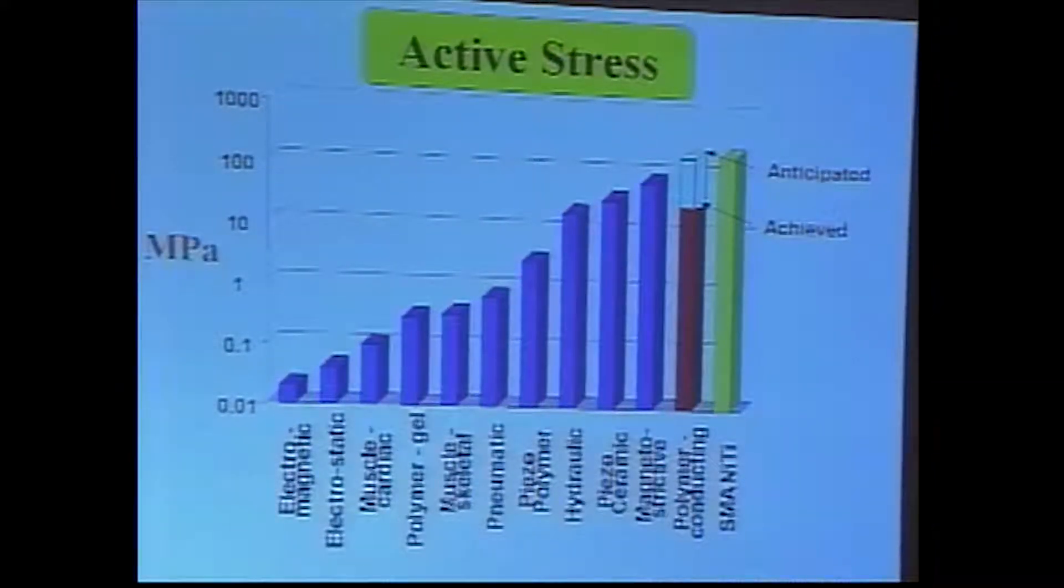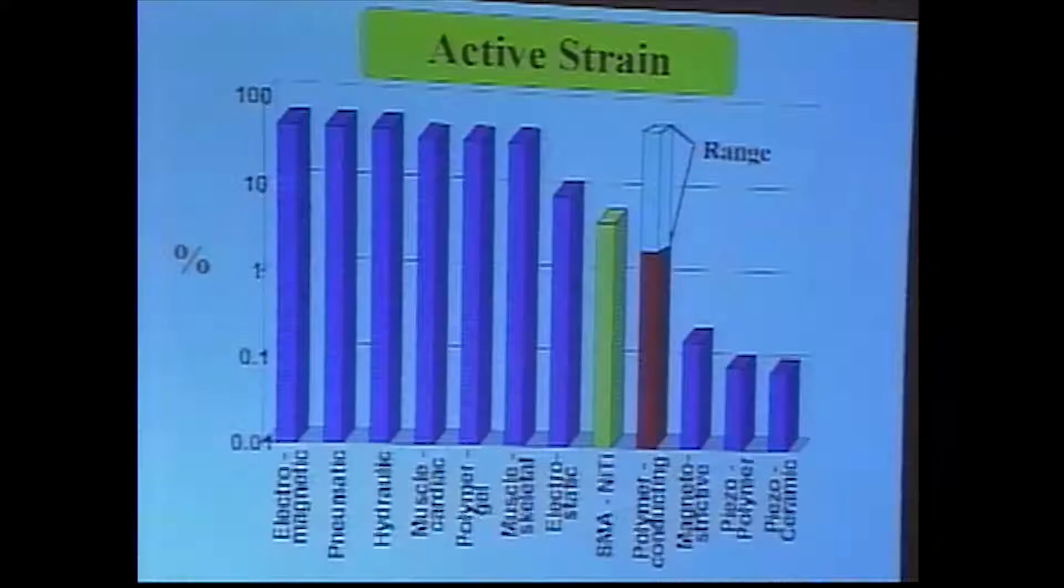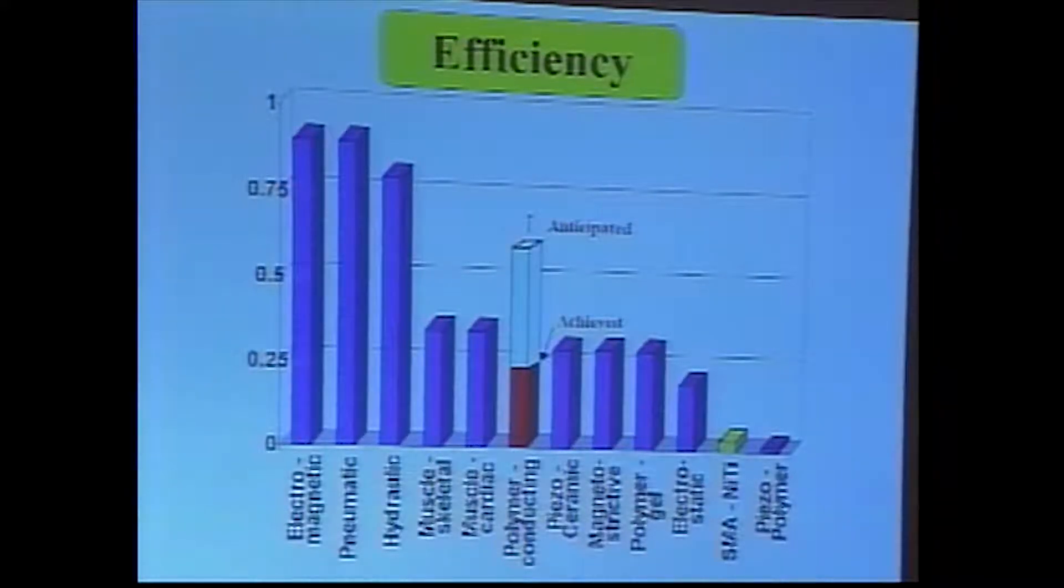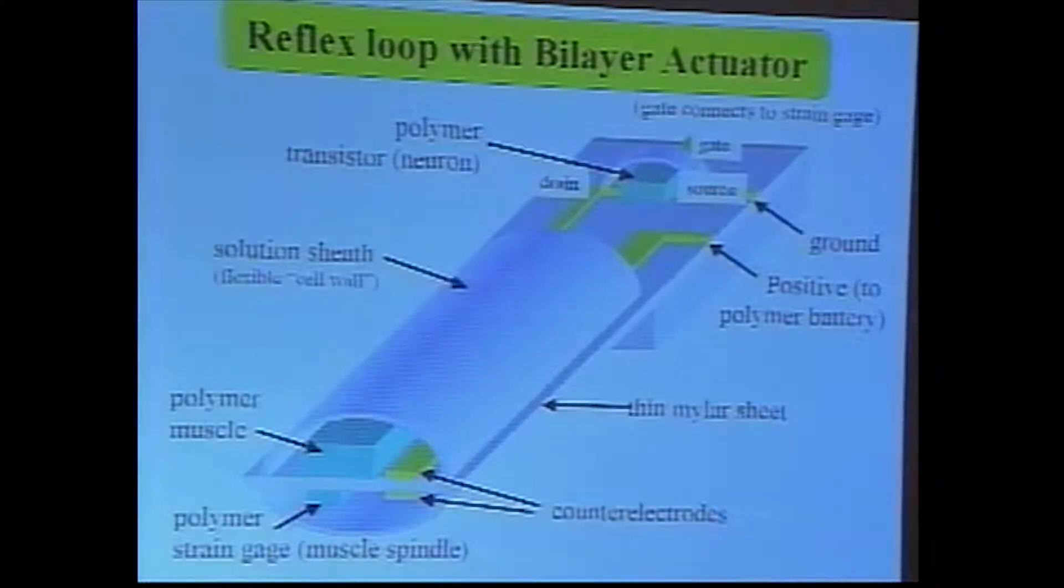So the active stresses we're achieving here are remarkably high. We've achieved in the order of 30 megapascals. The strains we achieve are typically 4% or 5%, but we've achieved up to 18%. Power to mass is also moderately high and expected to be much greater. And the efficiency also is surprisingly high. It's about equivalent to muscle.